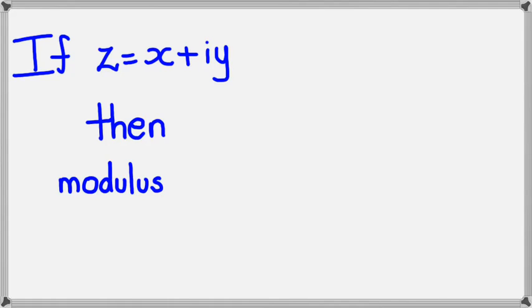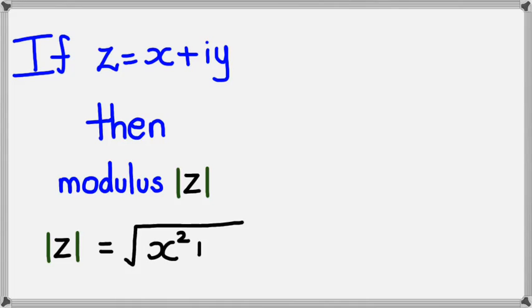So first we'll cover modulus. If z equals x plus iy, then modulus - the way it's written is it has two lines next to the letter, very similar to the absolute value, but just thicker lines. And how do we figure this out? Modulus can be written as square root of x squared plus y squared.